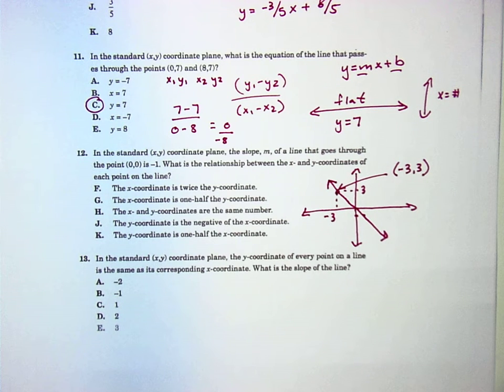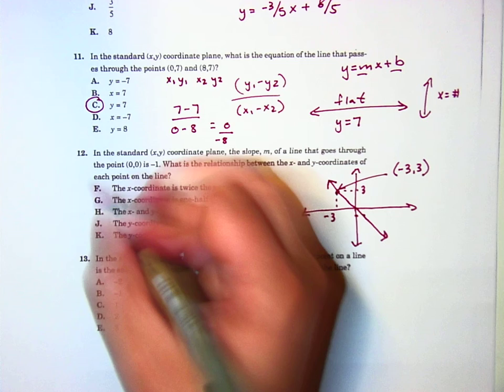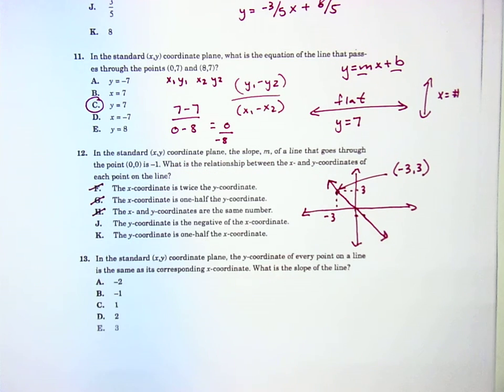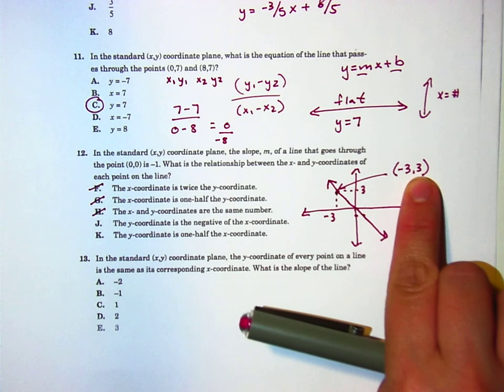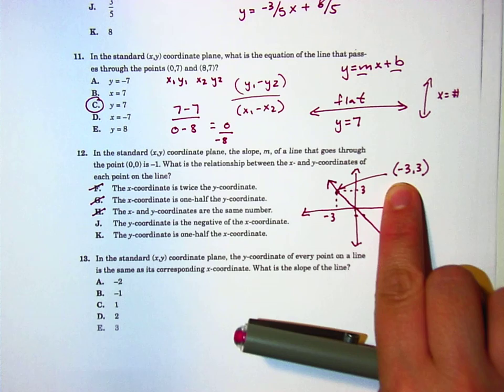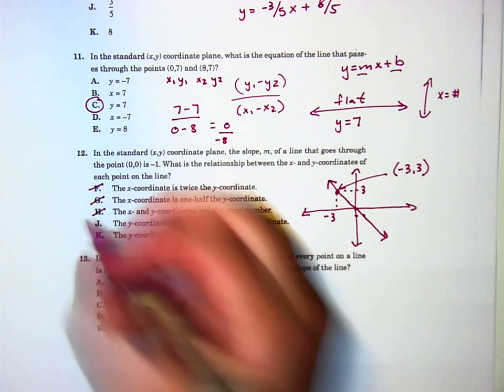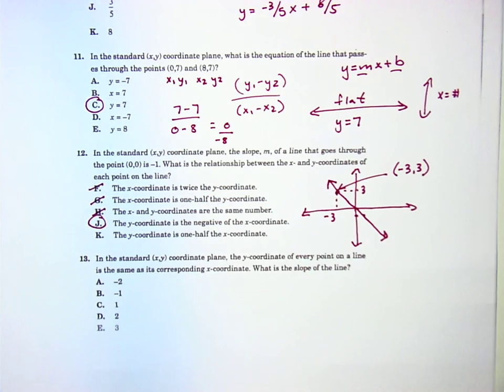Alright. So, the x coordinate is twice the y coordinate. Nope. X comes first. Definitely not twice. X is half. No. They're the same number. Technically, they're not. They're both 3's, but one's positive, one's negative. The y coordinate is the negative of the x coordinate. Yes, and that's true. Even though the y isn't negative here, but the x is negative, if I made a negative negative, it would make it a positive. So, j is the right answer right there.